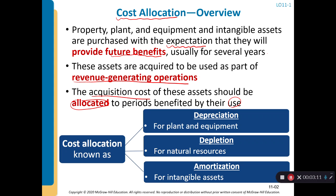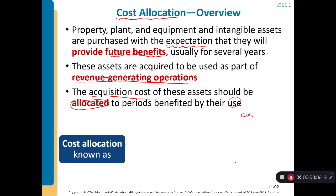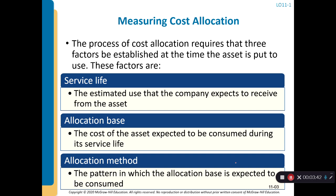The cost allocation terminology differs by asset type: for PP&E we call it depreciation; for natural resources we call it depletion; and for intangible assets we call it amortization.